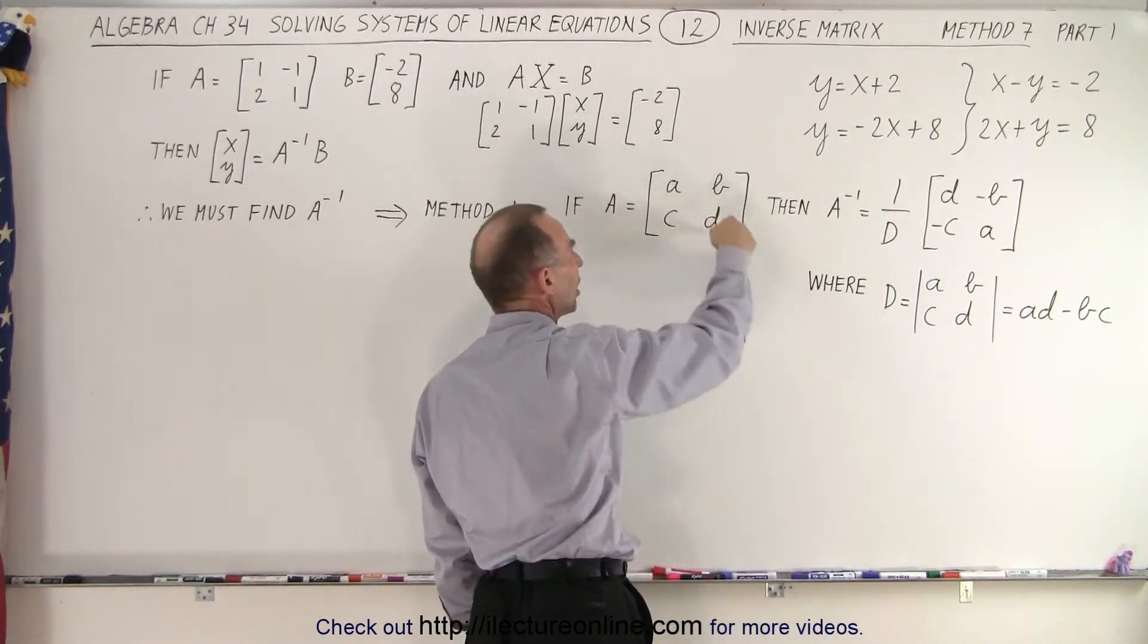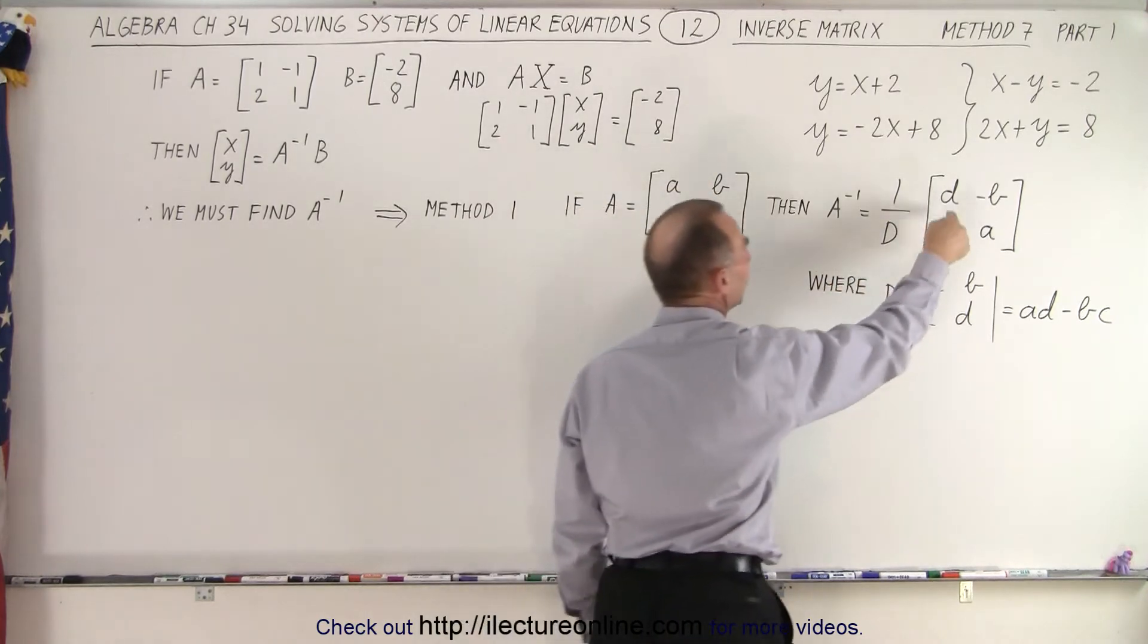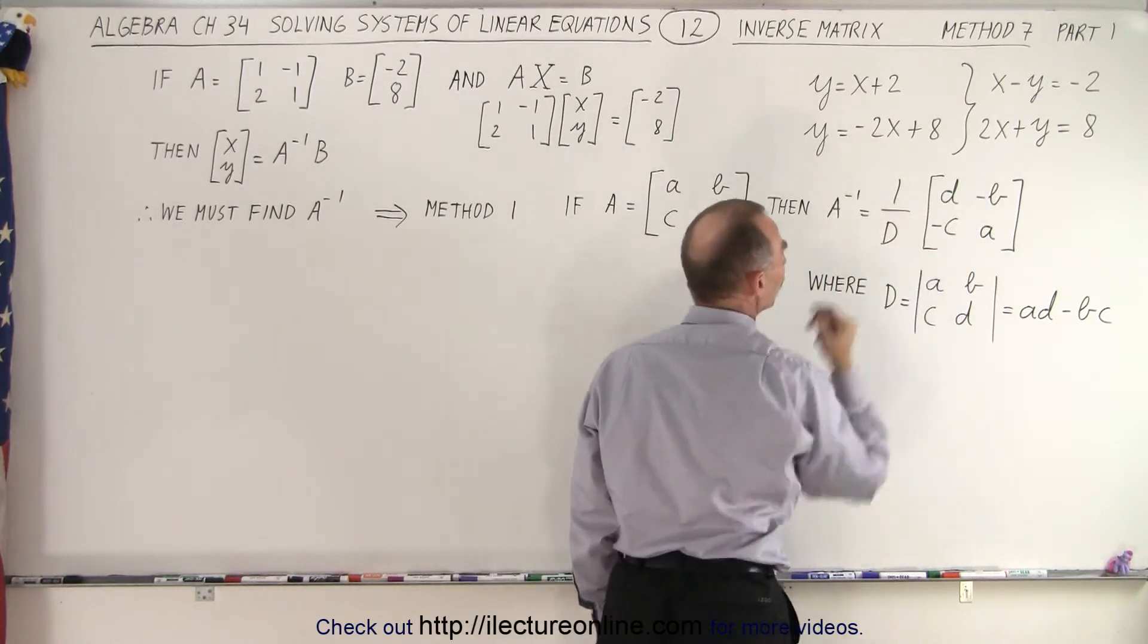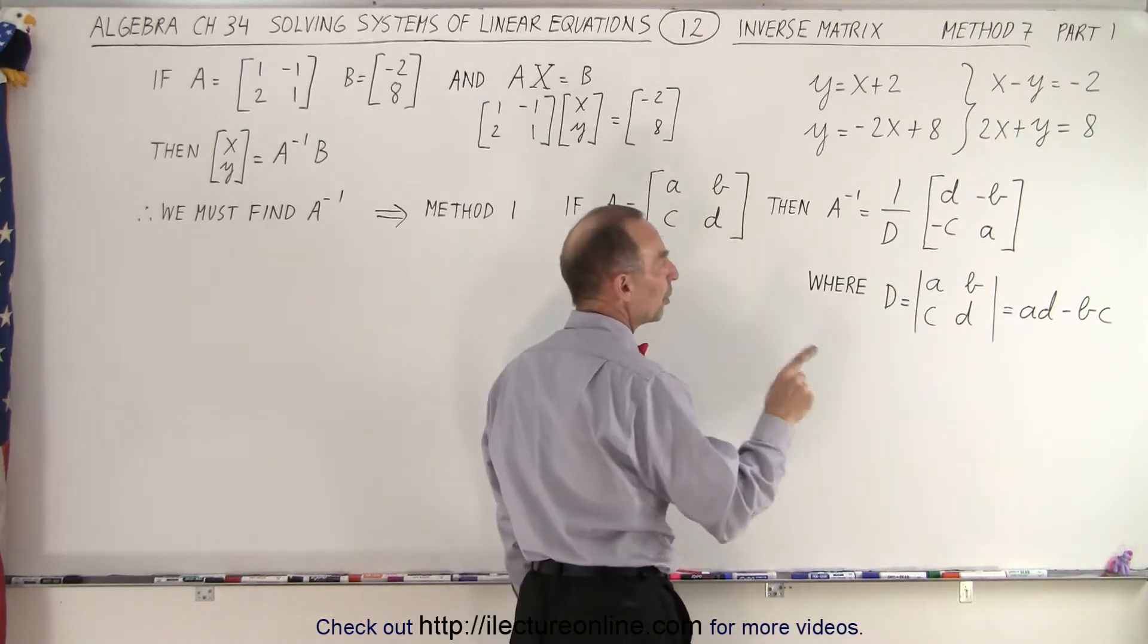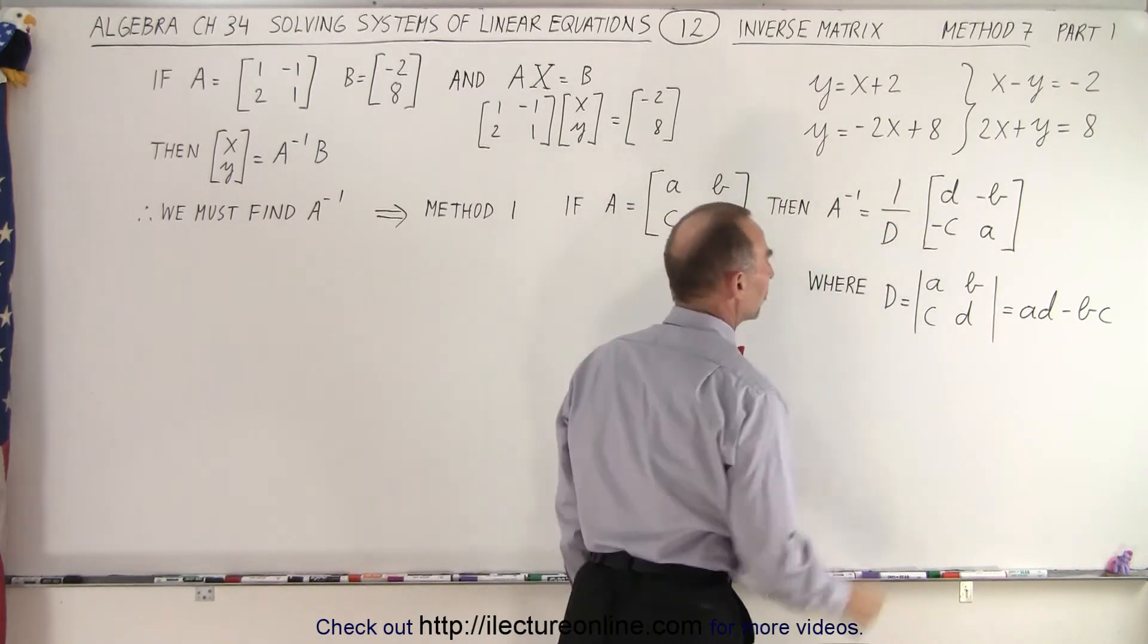all we did was we interchanged A and D, so we put D there and A there, so we interchanged those two, and then we put negative signs in front, and then we multiply that times 1 over the determinant.